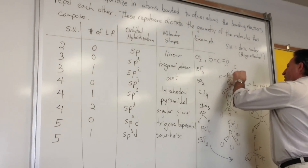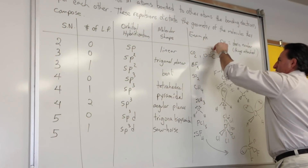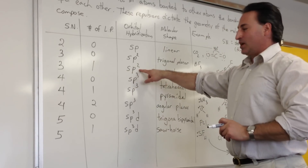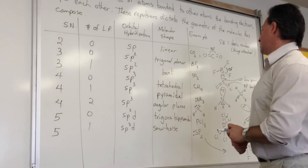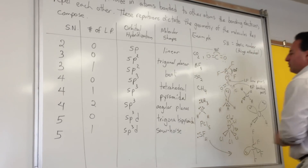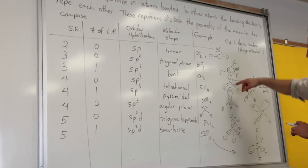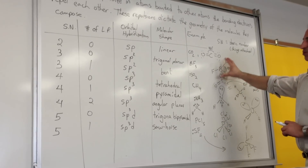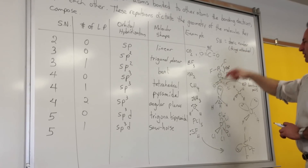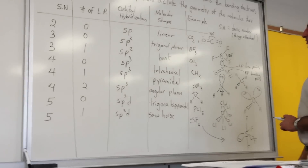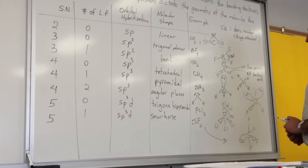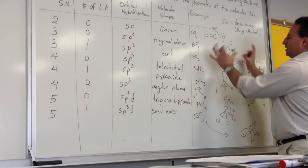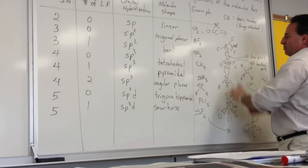The bond angles in trigonal planar are 120 degrees; in carbon dioxide they're 180 degrees. If you have three things attached to a central atom, one of them being a lone pair, it's still SP2 hybridized, but now the molecule is called bent — because lone pairs don't show up in X-ray crystallographic analysis; they don't diffract X-rays the way bonding pairs do. Sulfur dioxide is an example of bent geometry, and the angle is slightly less than 120 degrees.